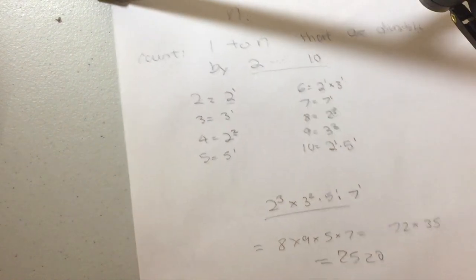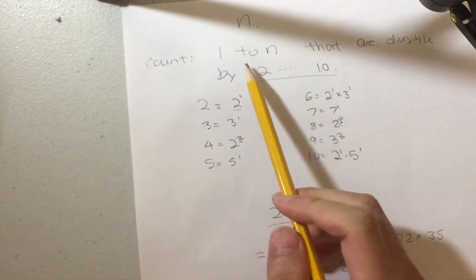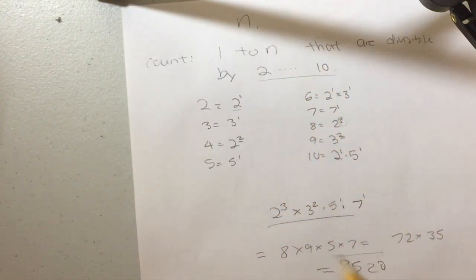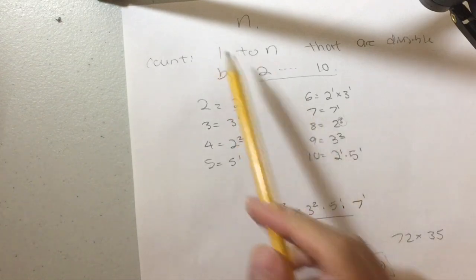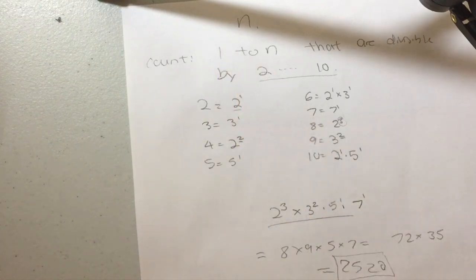And if we bring out our trusty calculator, 2520. And yeah, so now we have one single multiple to think about. Now let's think about the number of numbers that are divisible by this large number. Well, if you think about it, if I want to find the number of numbers from 1 to like 300 that are divisible by 6.